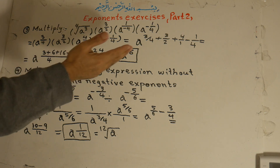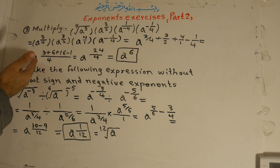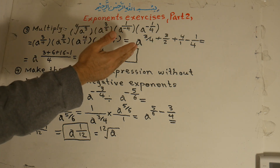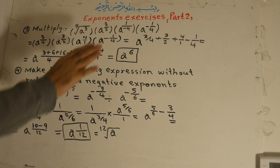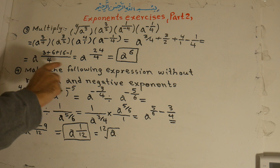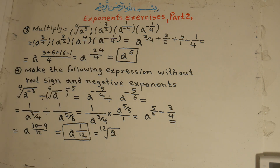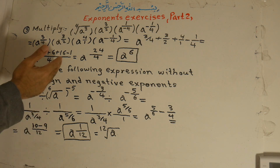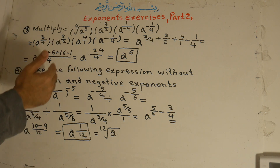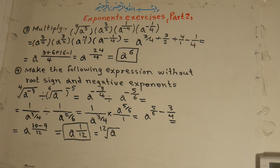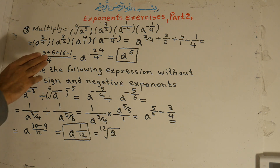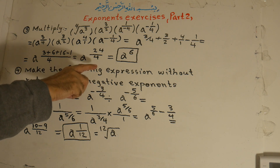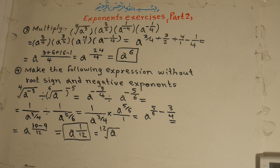For multiplication of numbers with the same base, we add the exponents: a to the power of 3 over 4, plus 3 over 2, plus 4 over 1, minus 1 over 4. The common denominator is 4. 4 divided by 4 is 1, 1 times 3 is 3. 4 divided by 2 is 2, 2 times 3 is 6. 4 divided by 1 is 4, 4 times 4 is 16. And 4 divided by 4 is 1, 1 times 1 is 1. So: 3 plus 6 is 9, 9 plus 16 is 25, minus 1 is 24 over 4. 24 divided by 4 is 6. A to the power of 6.